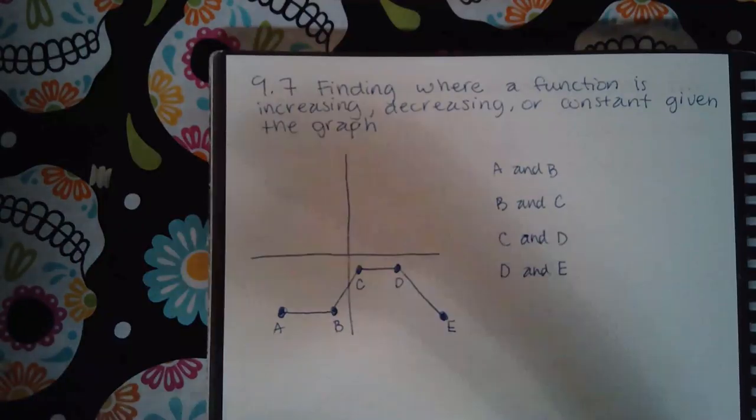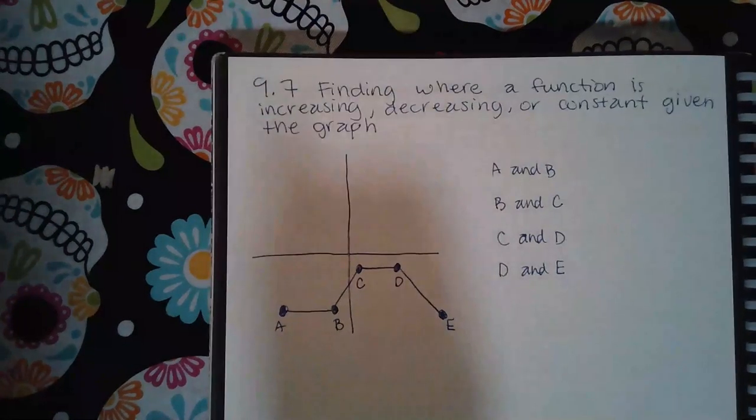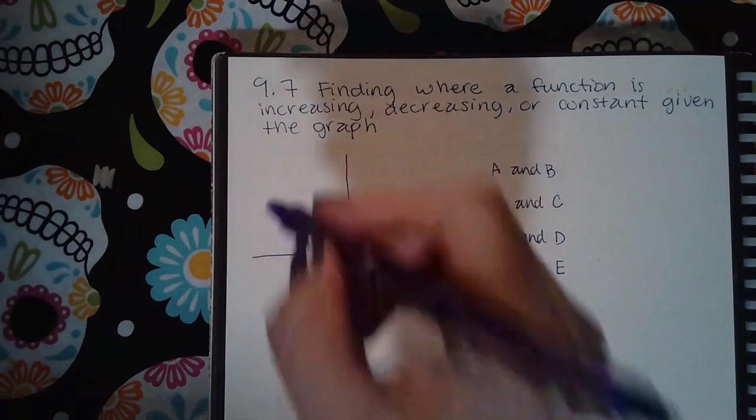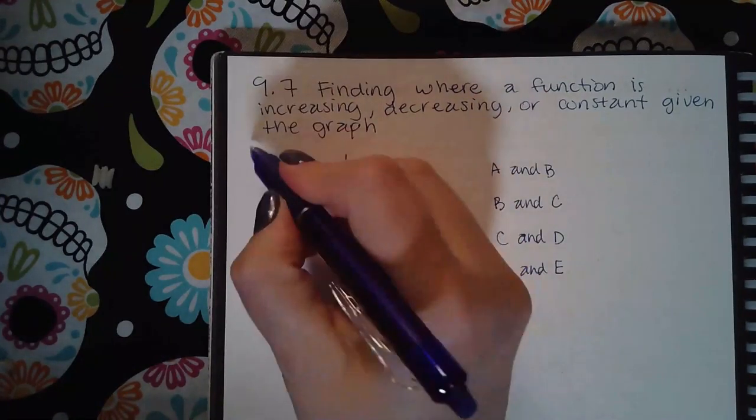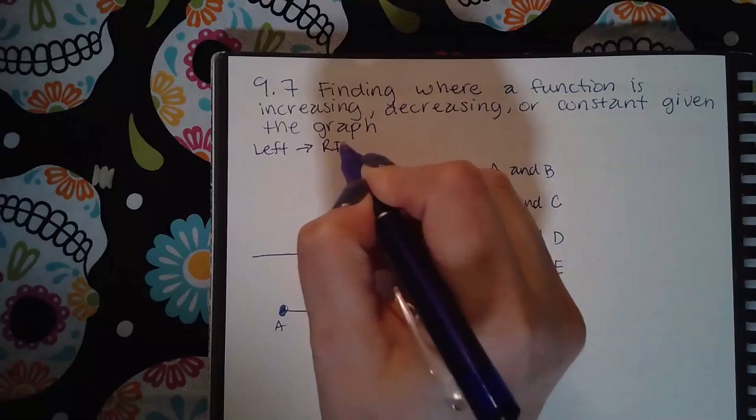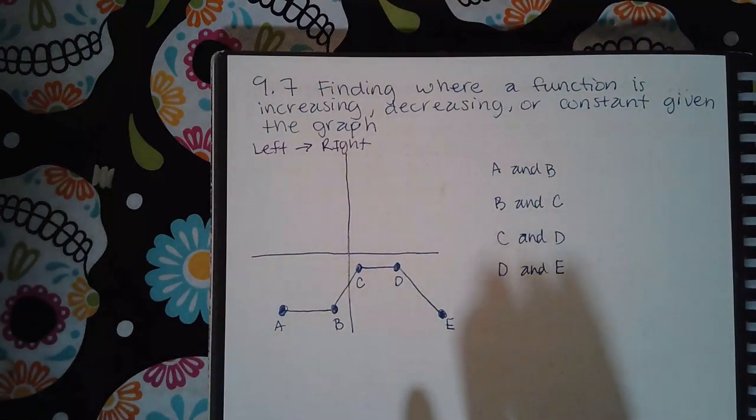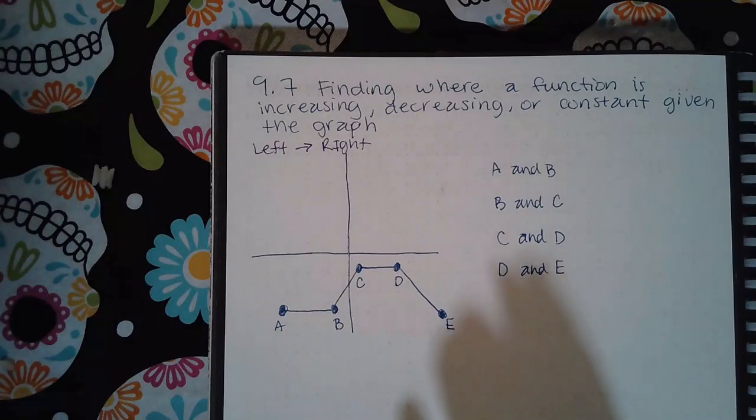Okay, here we have 9.7 where a function is increasing, decreasing, or constant. The biggest thing for us to do is look at here is we have to read the graph from left to right. You must read the graph from left to right. If you don't, you're going to get confused on whether it's increasing or decreasing.